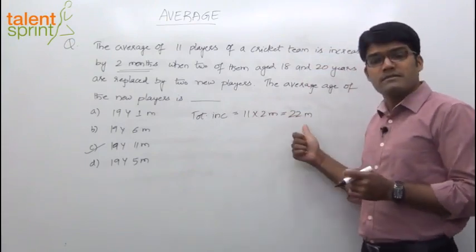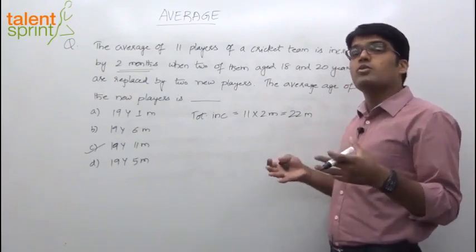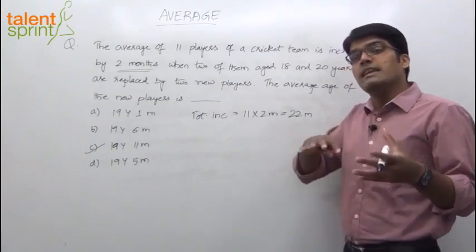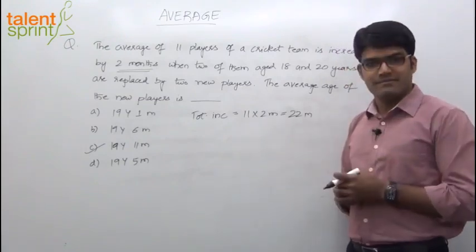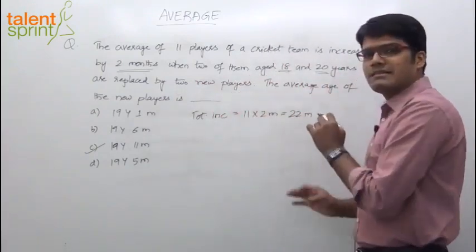Now why does this happen? Because the 2 new players who have joined are 22 months more, or their age is 22 months more than the ages of the 2 persons who have left. Now the 2 persons who have left are of the ages 18 years and 20 years.